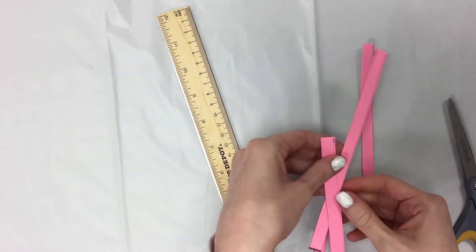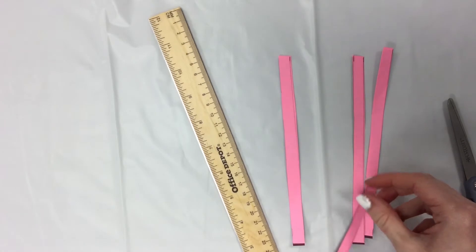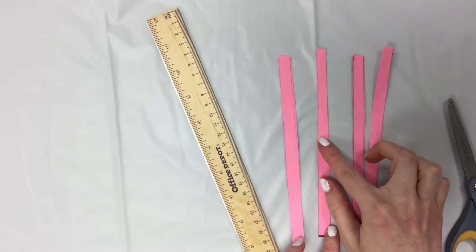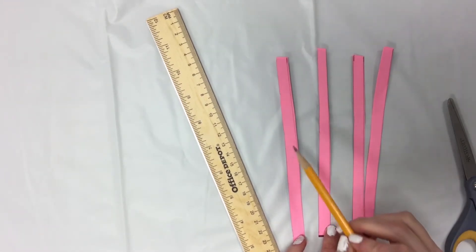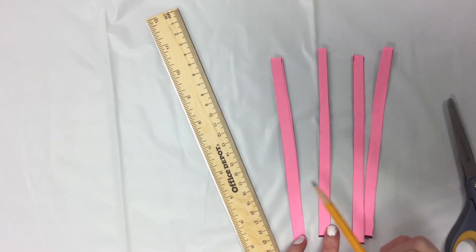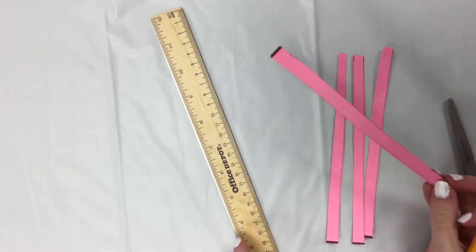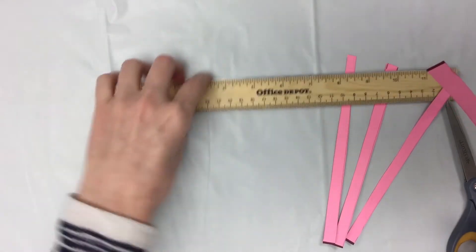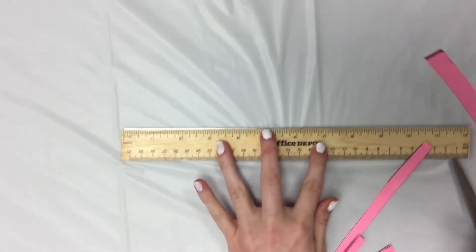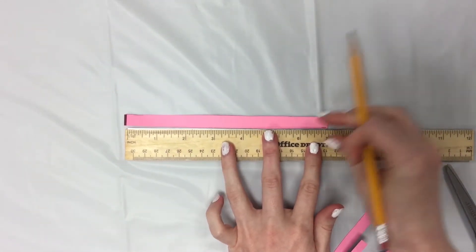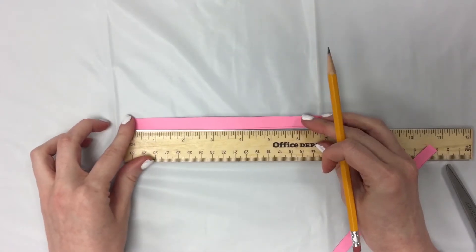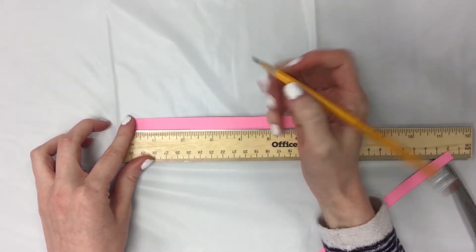So once you have four strips, something that's going to make this next part a little bit easier is if we go in and mark the center of each strip. So since my strips are about seven inches long, I'm going to go in and just mark them right at three and a half inches.